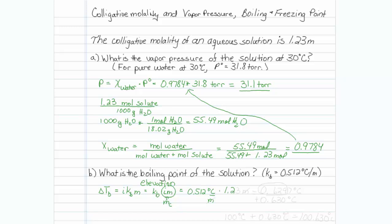KB is 0.512 degrees Celsius per molal and our colligative molality is 1.23 molal. We'll multiply that out and we find that the value is 0.6297 degrees Celsius. Think about sig figs, looks like we need 3 of them. So we're going to elevate the boiling point by 0.630 degrees Celsius. The boiling point of water is 100 degrees Celsius and we'll just add 0.630 degrees Celsius, and find that the boiling point has been elevated to 100.630 degrees Celsius.